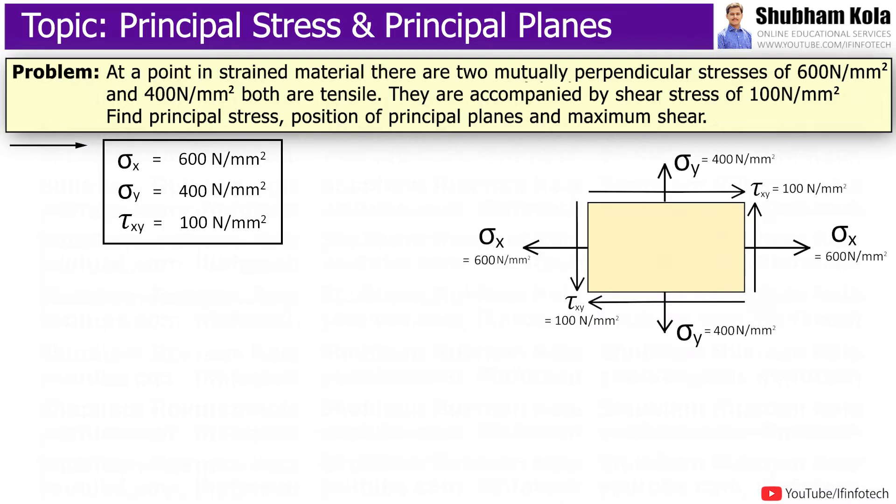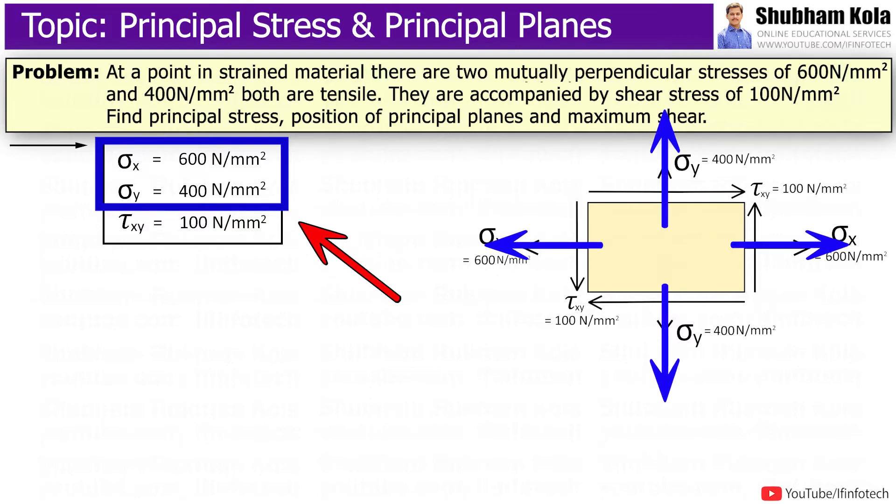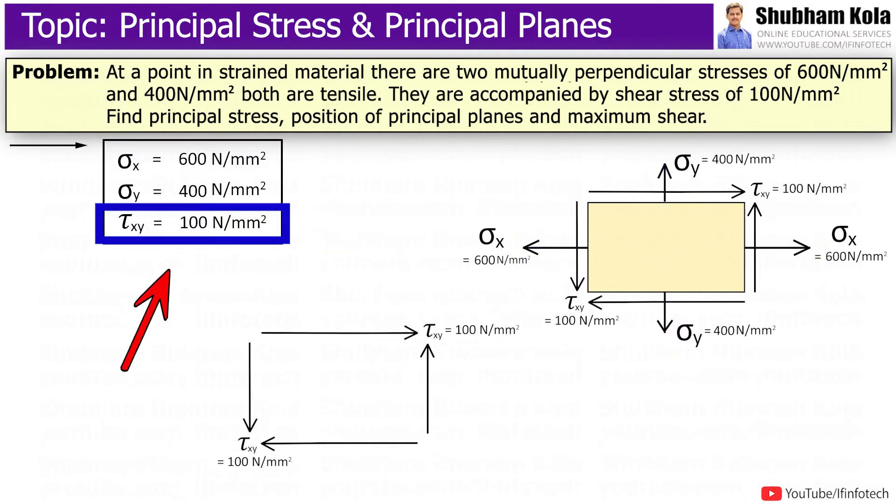In this problem, the type of stress is tensile. So I will take these tensile stresses with positive sign. And these tensile stresses are accompanied by shear stress, that is, tau_xy of 100 N per mm².